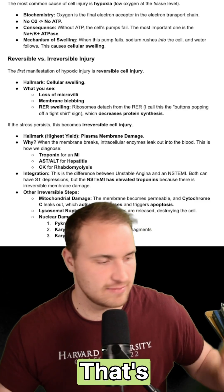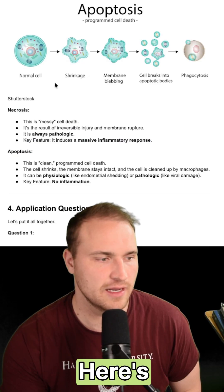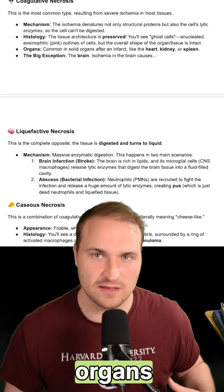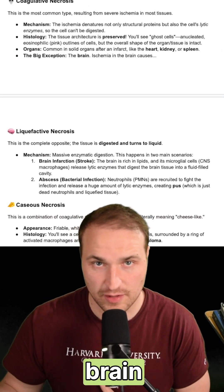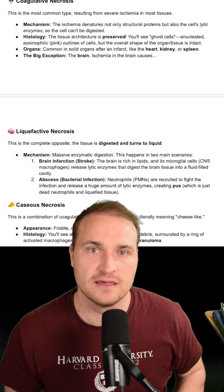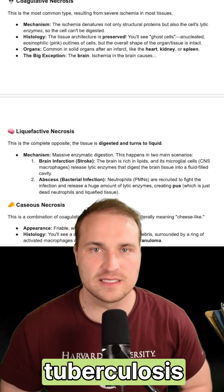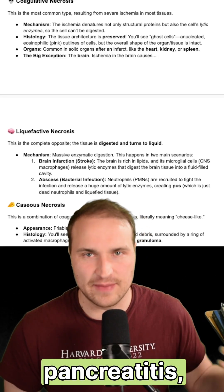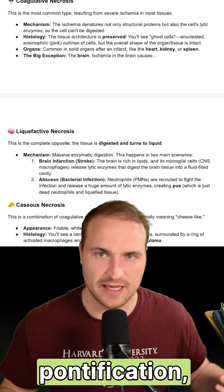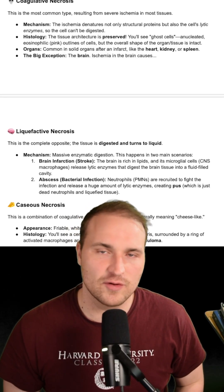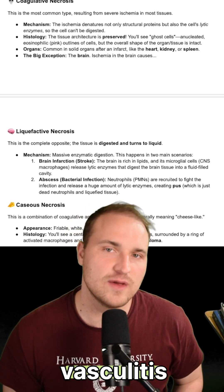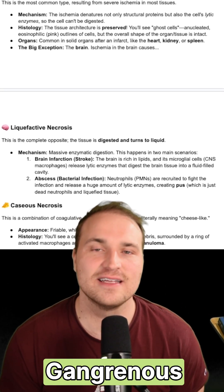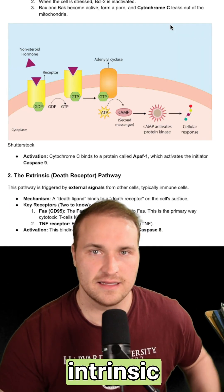Apoptosis is super clean, programmed, with no inflammation. Here's apoptosis, you can see. Coagulative necrosis is from ischemia of solid organs, except for the brain. Liquefactive is for the brain. Caseous necrosis would be tuberculosis and fungal infections. Fat necrosis — think pancreatitis, saponification, and hypocalcemia. Fibrinoid should make you think of immune vasculitides and malignant hypertension. Gangrenous would be ischemic limb and infection.